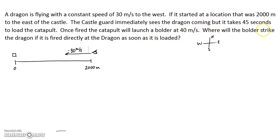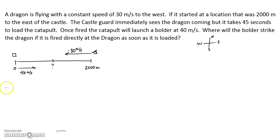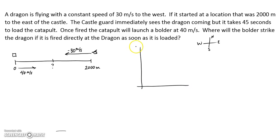Once fired, the catapult will launch a boulder at 40 meters per second. We want to know where the boulder's going to strike the dragon — where are these two going to collide? So let's list some givens. I like to make a little graph here — a position-time graph.